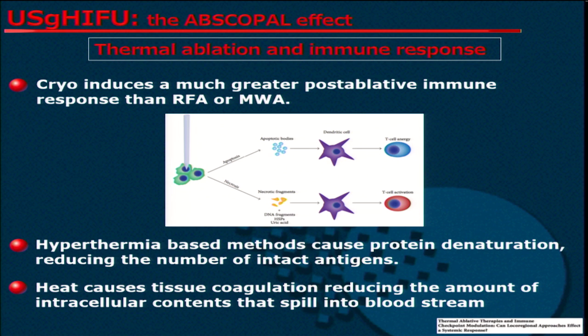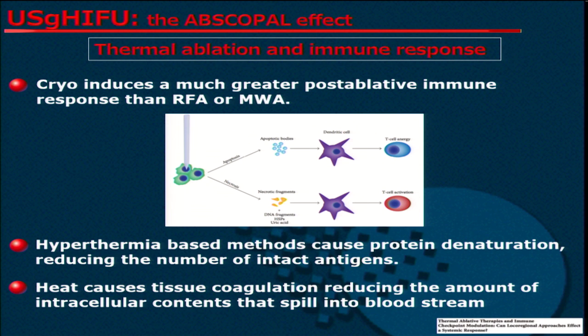The relationship between thermoablation and immunoresponse is controversial. Very recently, a paper was published advocating thermoablation as responsible for tumor growth elsewhere during thermoablation of liver metastases. However, cryoablation may induce a much greater possibility of immune response than radiofrequency ablation and microwave. This is probably because hyperthermia-based methods may increase protein denaturation, reducing the number of intact antigens exposed by the cells, and heat may cause tissue coagulation, reducing the intracellular contents spilled into the bloodstream for CD8 activation.